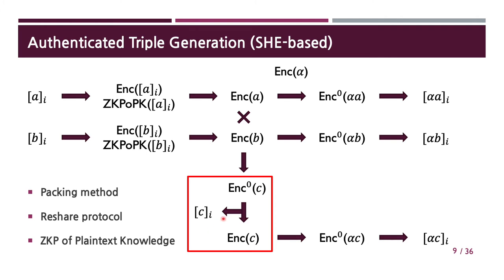So the standard method here is the so-called reshare protocol. Roughly speaking, the reshare protocol securely re-encrypts a level-0 HE ciphertext, which does not allow any more multiplications, into a fresh ciphertext. The reshare protocol allows an SHE scheme with multiplicative depth 1 to be sufficient. Then we can proceed just like for alpha*A and alpha*B. We remark that the messages are actually vectors by the parallelism offered by packing methods of lattice-based HE schemes.